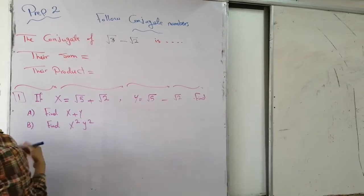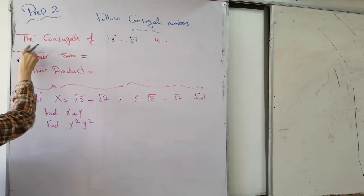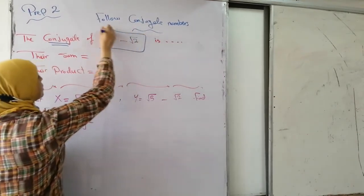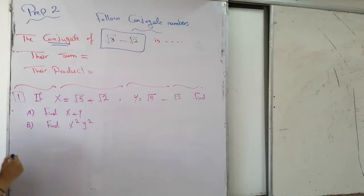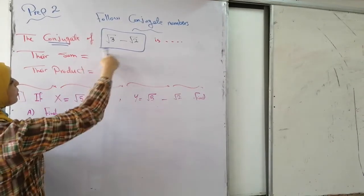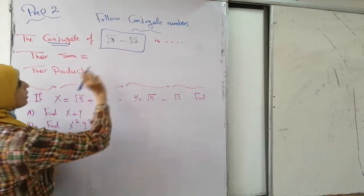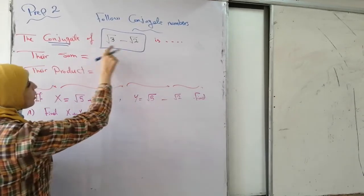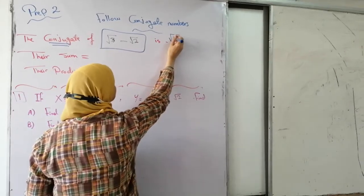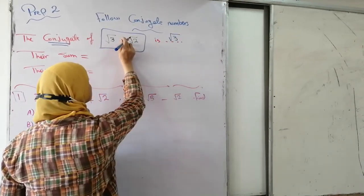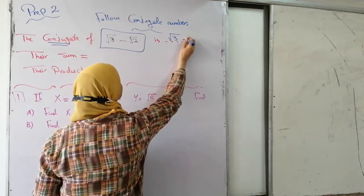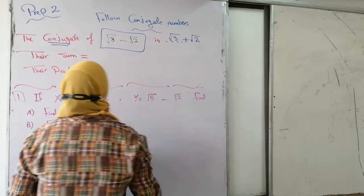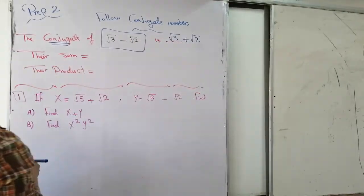Before we solve several exercises on conjugate numbers, let's review: what is the conjugate number? The conjugate number of root 3 minus root 2 — what should I do to find it? We change the sign of the second term. So the first term stays as it is, and instead of negative root 2, I write positive root 2. So these two numbers are conjugates.